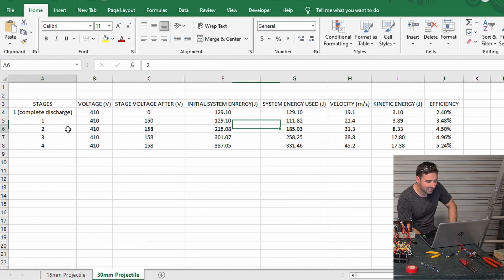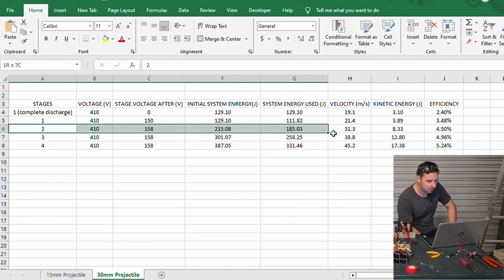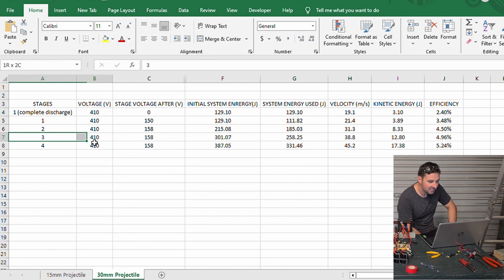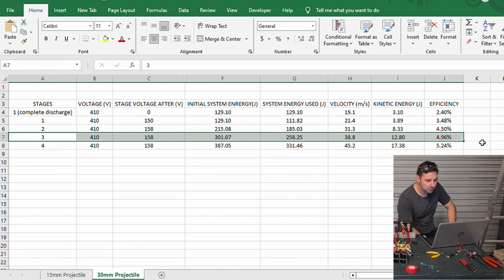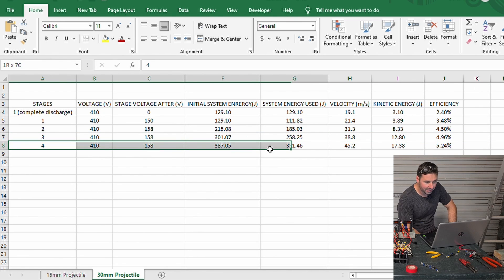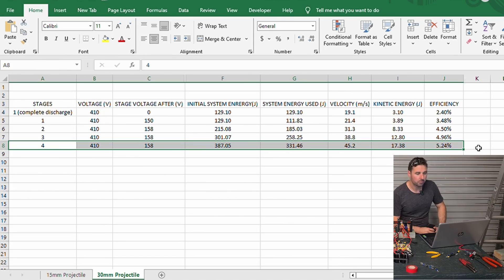The second stage increased the energy to 8.33 joules at an efficiency of 4.5 percent. Followed by the third stage with 12.8 joules of projectile energy at 4.96 percent efficiency, and finally the fourth stage reached a projectile energy of 17.38 joules with an efficiency of 5.24 percent.